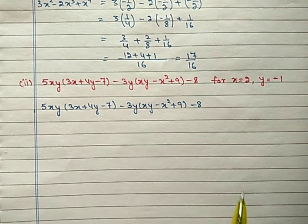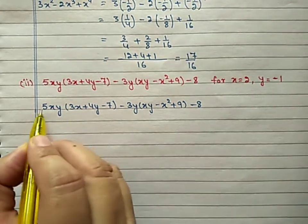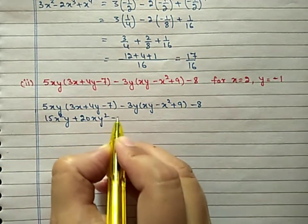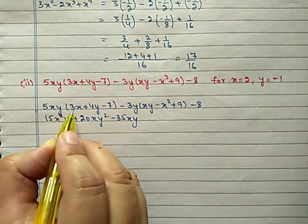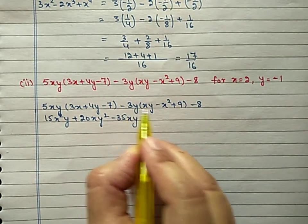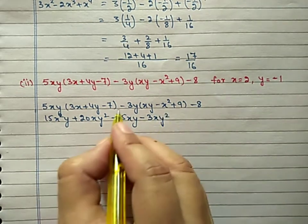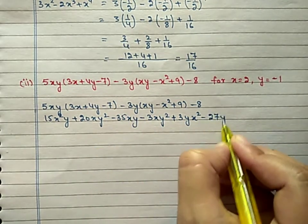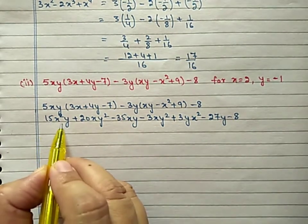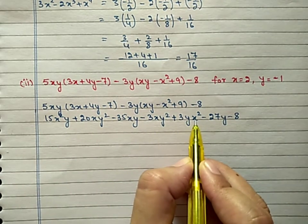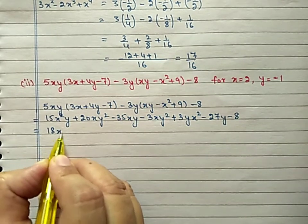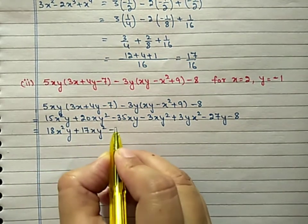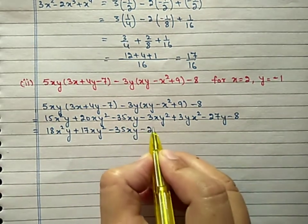Second part of question 5: First simplify. Multiplying 5x by (3x²y − 4xy) gives 15x²y − 20xy². Minus 35xy. Similarly multiplying −3y gives −3xy² + 3yx² − 27y − 8. Now combining like terms: 15x²y + 3x²y = 18x²y; and 20 − 3 = 17, so 17xy². Remaining terms: −35xy and −27y − 8.